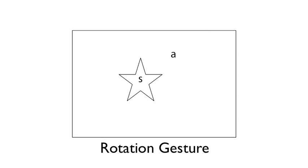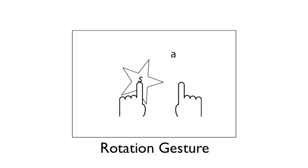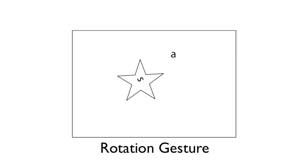Take this rotation gesture for example. The first touch comes down on the star, and the second touch comes down anywhere. Both touches can move and then come up in any order.